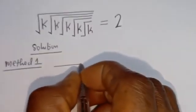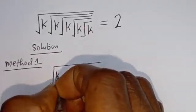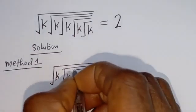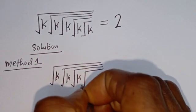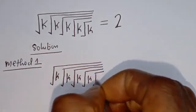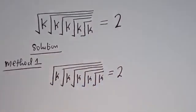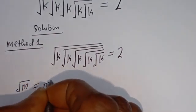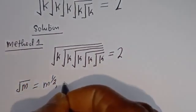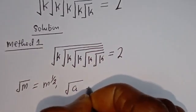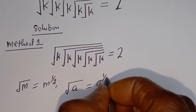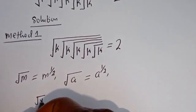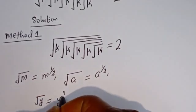We have square root of k, square root of k, square root of k, square root of k, square root of k, all equal to 2. Take note that if you have square root of M, this is equal to M to the power of 1 over 2. Similarly, square root of A equals A to the power of 1 over 2, and square root of Y equals Y to the power of 1 over 2.